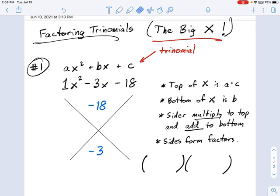And the sides, here's where you have to do a little thinking. The sides of the big X have to multiply to the top number, but add up to the bottom. So we have to think about what kind of numbers multiply to negative 18. And if you're new at this, go ahead and make yourself a little factor table. What multiplies to negative 18?